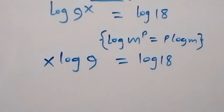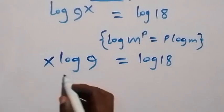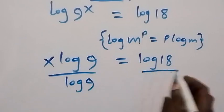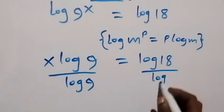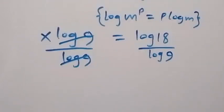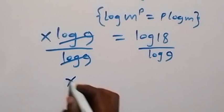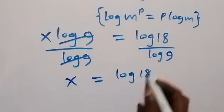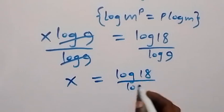Then, next step, we can divide through by log 9. Log 9 cancels out here. Then we have x which is equal to log 18 over log 9.